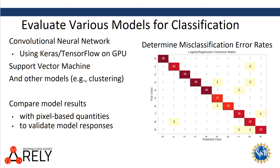We'll evaluate various models for classification in addition to the convolutional neural network. We'll also test the support vector machine and other models such as hierarchical clustering for accuracy and speed. We'll also compare model results with pixel-based quantities from quantitative image processing to validate our model responses.